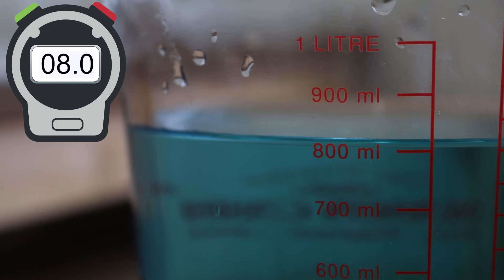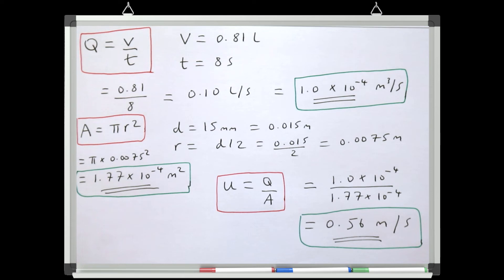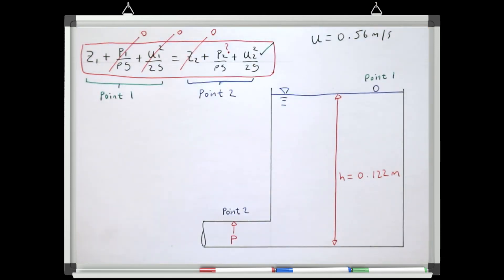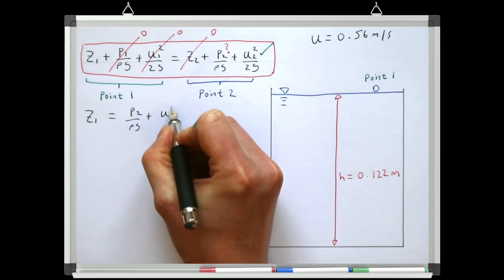When measuring the discharge, I collected 0.81 litres and it took me eight seconds, giving a discharge of 0.1 litres per second. For my pipe with a diameter of 15 millimetres, that corresponds to a mean velocity of 0.56 metres per second. I'm not going to work through every step of this calculation as we looked at it in Lesson 1 Part 1, but the working out is shown if you want to pause and check. As this is a steady flow and the pipe diameter is constant, the velocity is the same at all points in the pipe. So now we have U2, and the only unknown in the equation is P2, so we can rearrange Bernoulli's equation to get the pressure head at point 2.